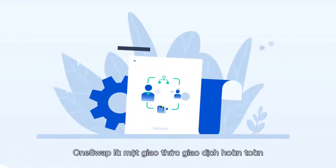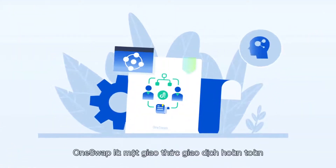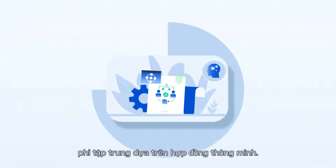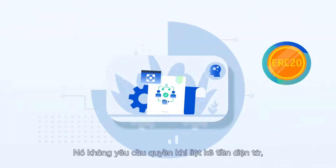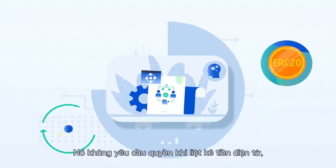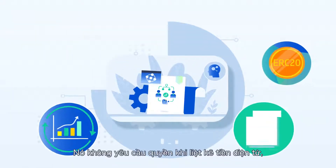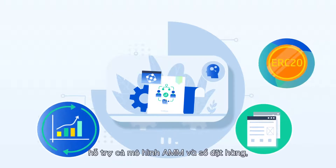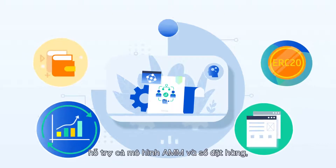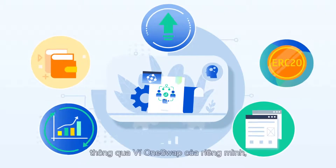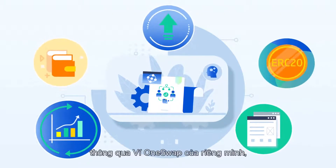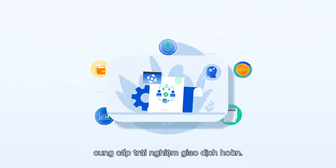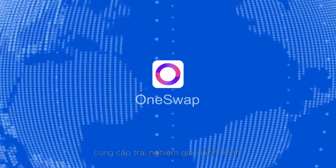OneSwap is a fully decentralized transaction protocol based on smart contracts. It does not require permission to list cryptos, supports both AMM and the order book, and improves user interaction through its own OneSwap wallet, providing a one-stop transaction experience.